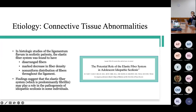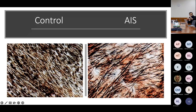Regarding connective tissue abnormalities: this study looked at the ligamentum flavum in scoliotic patients and found that, compared to controls, it had disarranged fibers, a marked decrease in fiber density, and a non-uniform distribution, potentially suggesting that an elastic fiber system may play a role in the pathogenesis of AIS.